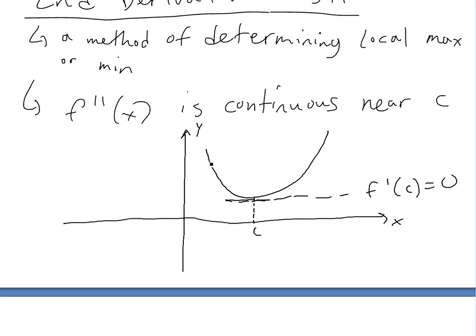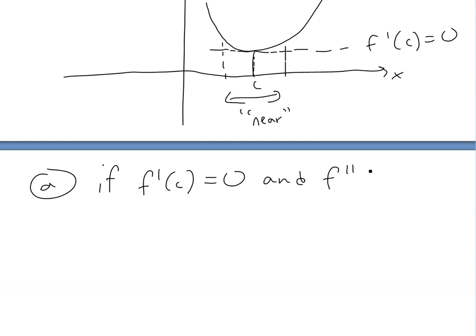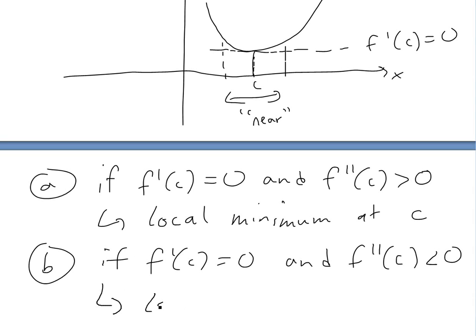So basically at this point c, if the second derivative is continuous near c — just around that area — then the second derivative test states: Part a — if f prime of c equals zero and f double prime of c is greater than zero, then you have a local minimum at c. And conversely, part b — if f prime of c equals zero and f double prime of c is less than zero, then you have a local maximum at c.